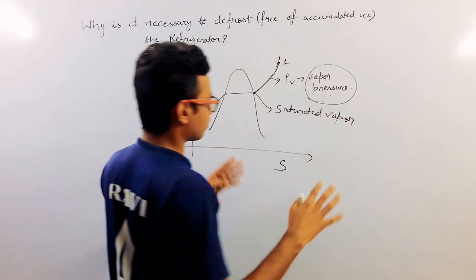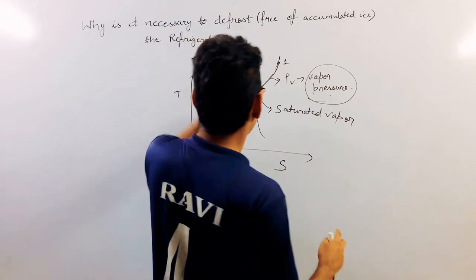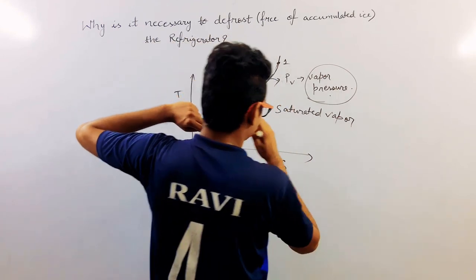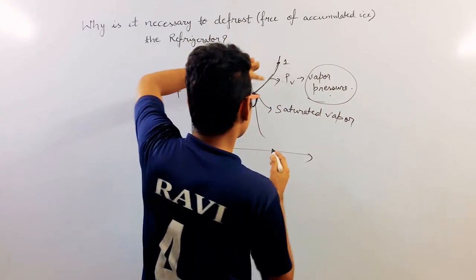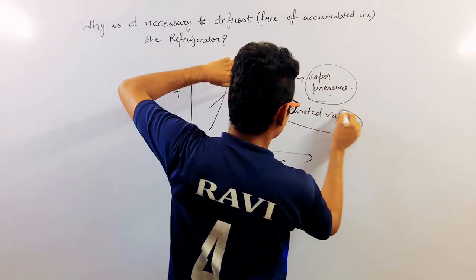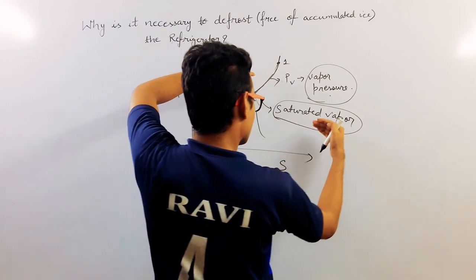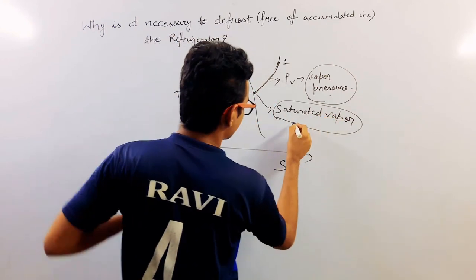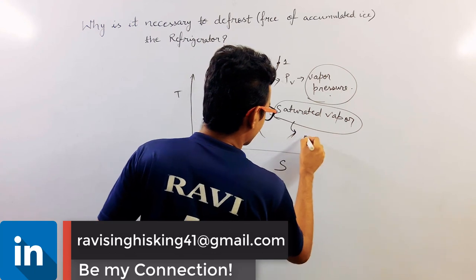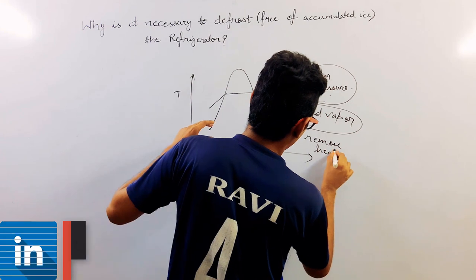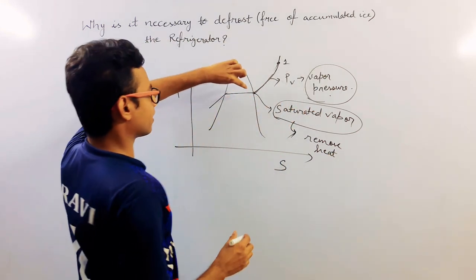That is, we are staying at a particular vapor pressure, constant vapor pressure, and we are decreasing the temperature of the air. So eventually we come at a saturated vapor point, and if we are going to decrease temperature further, we are going to remove some more heat. Then condensation will begin.